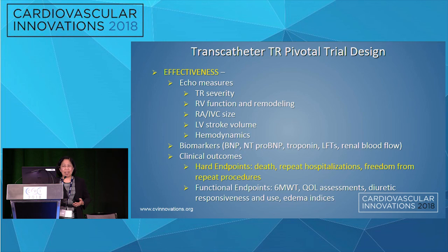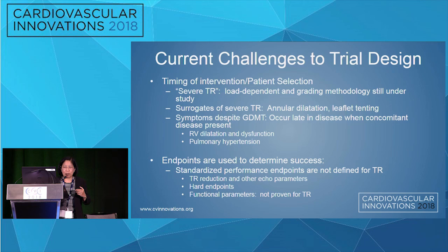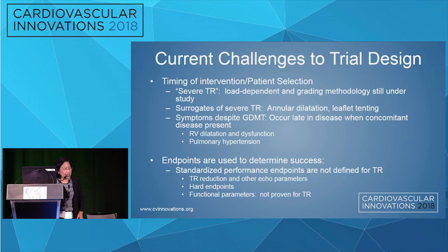In summary: timing of intervention is difficult because we don't understand severe TR, we don't know how to grade it yet, but we're working on it. There are surrogates of severe TR that seem fairly robust and make pathophysiologic sense, along with symptoms, but guideline-directed medical therapy is limited — which opens the door for transcatheter procedures. Endpoints will include efficacy from TR reduction, echo parameters of RV remodeling, hard endpoints, and functional endpoints.